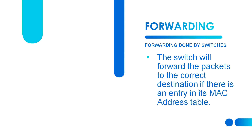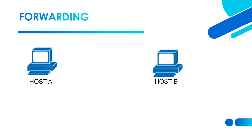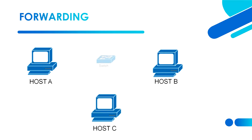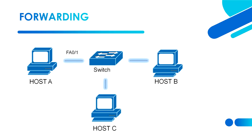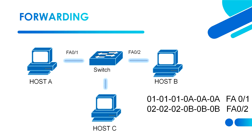Let's have an example network. Here we have Host A, Host B, Host C, and a switch. The port of the switch connected to Host A is FastEthernet 0/1, and the port connected to Host B is FastEthernet 0/2. We have a sample MAC address table showing the MAC addresses of Host A and Host B and the ports they are connected to on the switch.